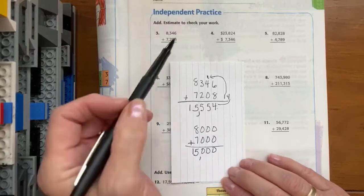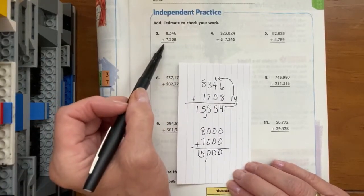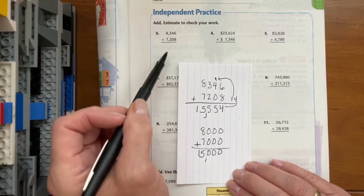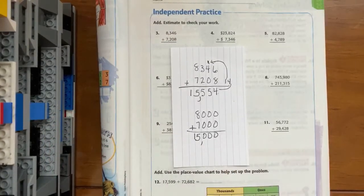So we can show our work here in the space and we can write our answer underneath here. Does that make sense? Okay.